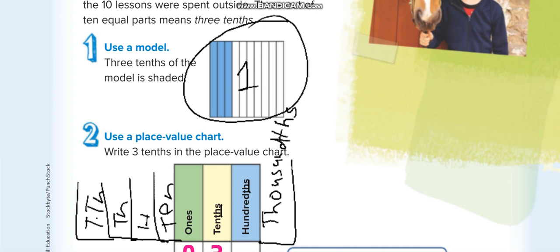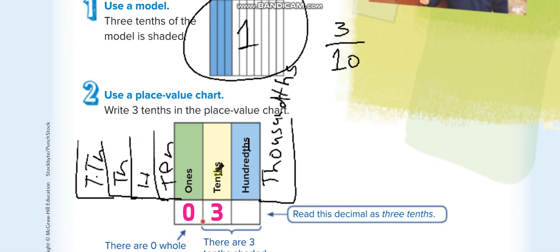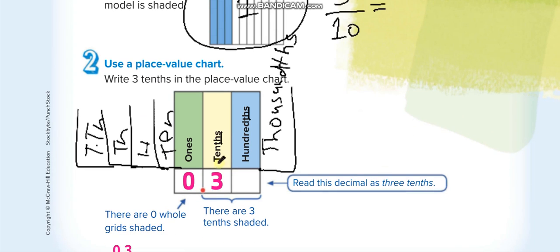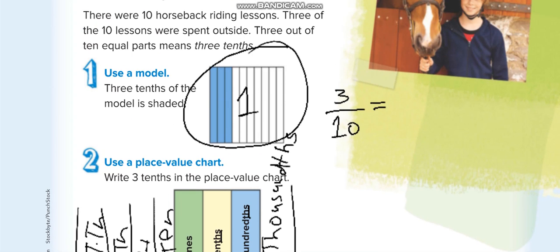If we write a fraction, the denominator shows us the shaded part, three. So when we divide one whole into ten parts, we call it tenths, and this is how we write its fraction. And the decimal is the first place value after the... before the decimal, the first place value is zero point... zero point three.